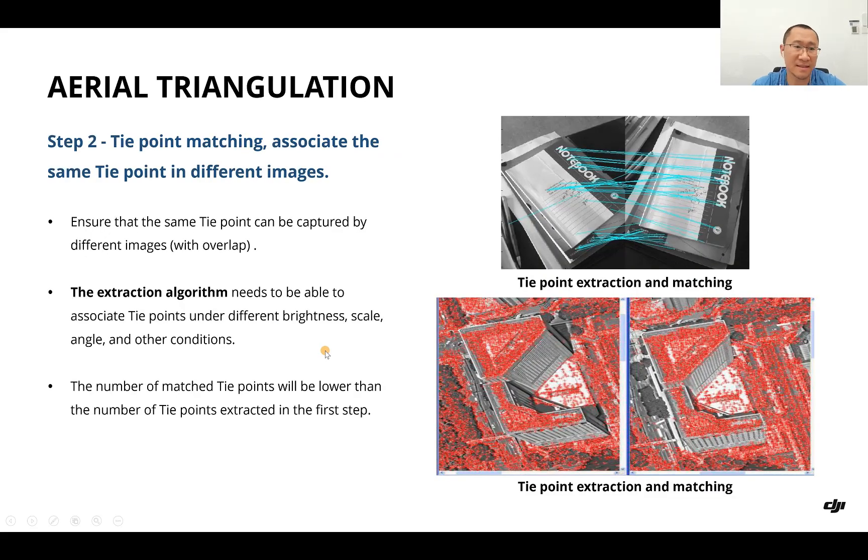In step two, we do tie point matching: associate the same tie point in different images. This way we ensure that the same tie point can be captured by different images. That's why we need overlap. The extraction algorithms need to be able to associate tie points under different brightness, scale, angle, or other conditions.